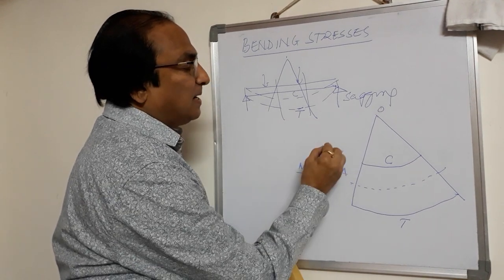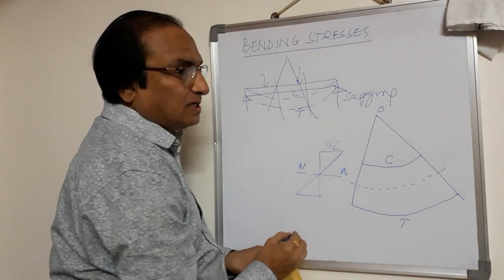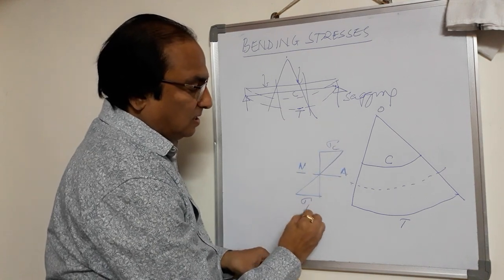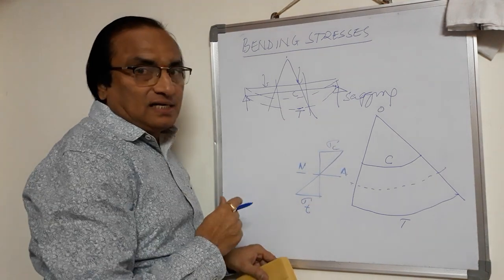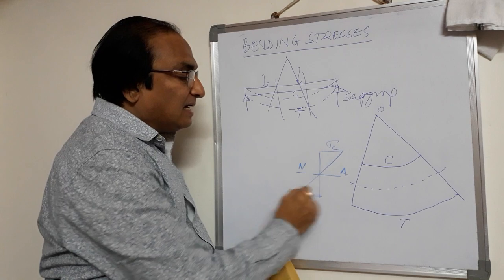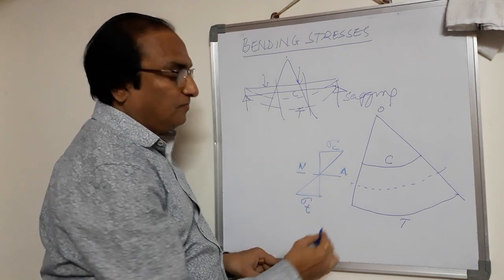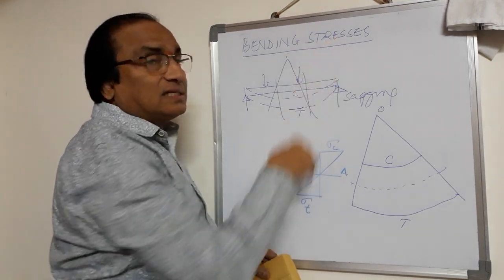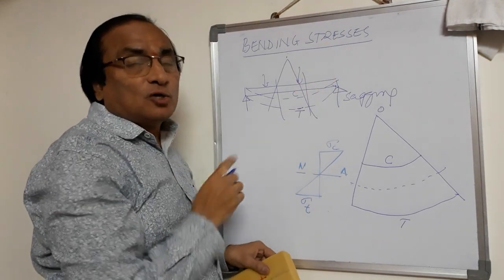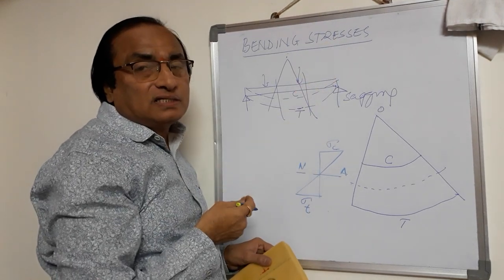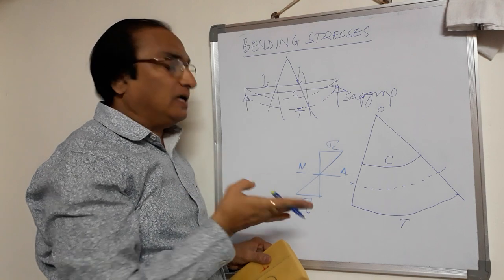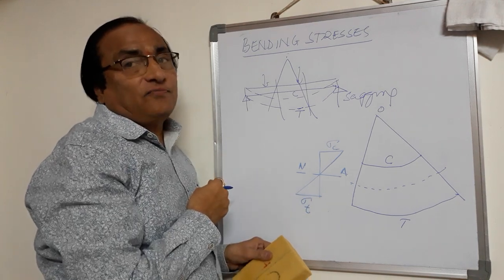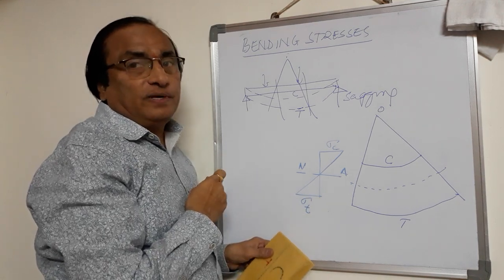If you draw the bending stress diagram for this, you get that if I draw a cross section, this is the neutral layer — we call it the neutral axis. The parts above are in compression, so compressive stress. The parts below are in tension, so tensile stress. This diagram is known as the bending stress diagram. So our aim in this topic is to draw the bending stress diagram for the beam.